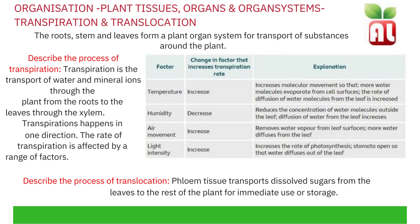The process of translocation is the movement of dissolved sugars from the leaves to the rest of the plant, for immediate use in processes such as respiration or for storage. Dissolved sugars are transported through the phloem tissue, and this happens in all directions through the plant.